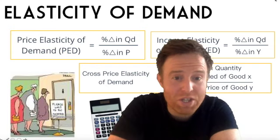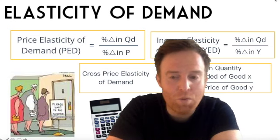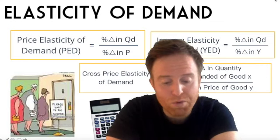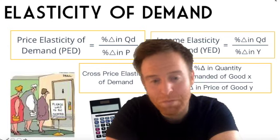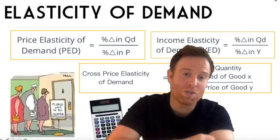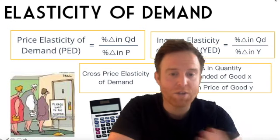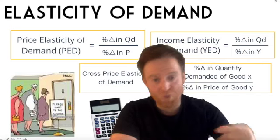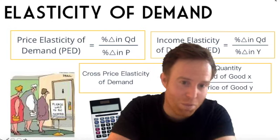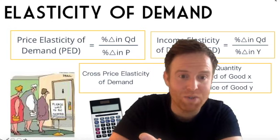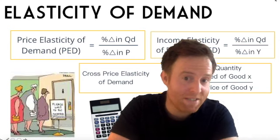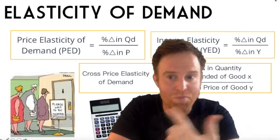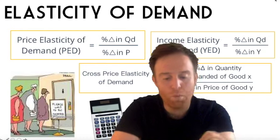Before you can do anything, you need to make sure that you know your percentage changes. When you're looking at your percentage changes, try and be as consistent as possible. What I would recommend is when you calculate the difference, do your new minus your original, divide by your original. The reason for that is because it'll tell you what's actually happened within the market. If quantity demanded has risen, you should get a positive percentage change. If price has fallen, you should get a negative percentage change.